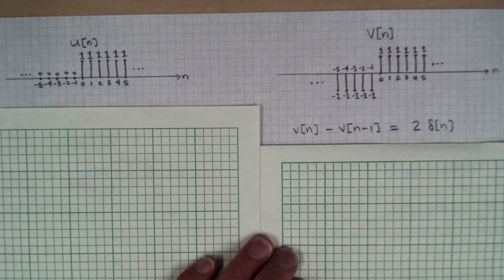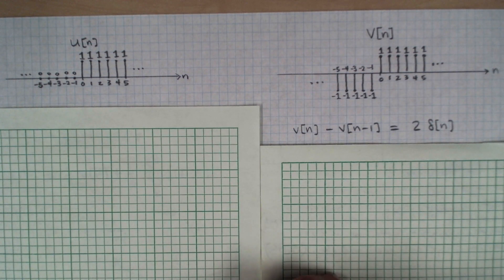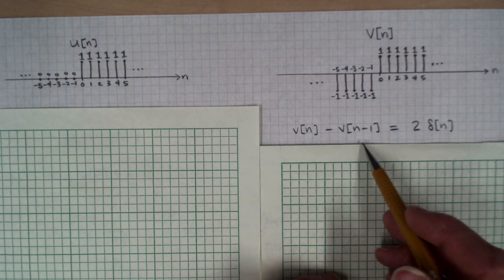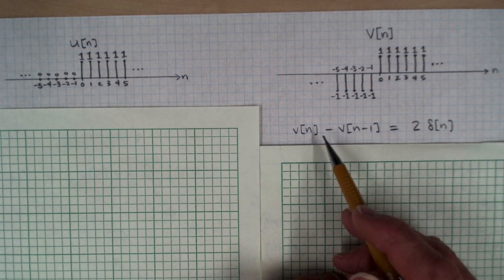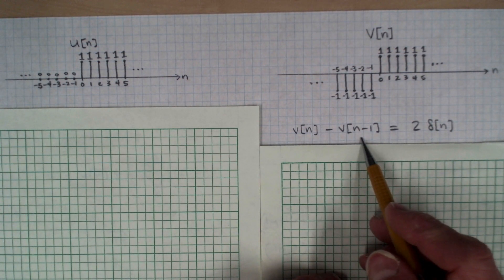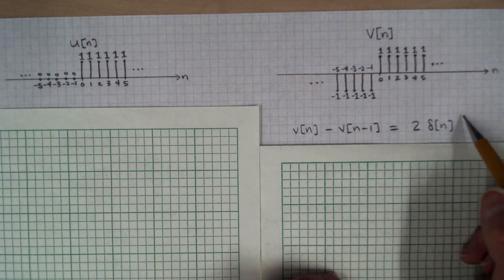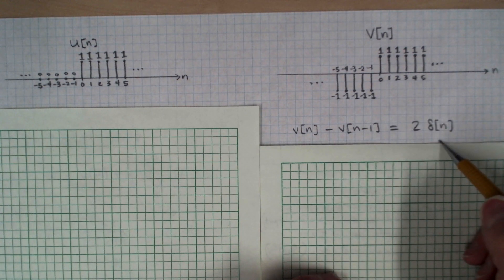The important feature of this function that we're going to use is that if you compute this first difference between the function and a shifted version of the function, delayed by one sample, then you get two times the Kronecker delta function.